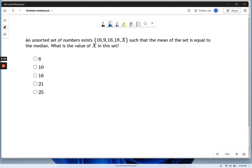Well, let's talk about mean and median first. Mean, if you remember, simply means the average. So the average of this set is 16 plus 9 plus 16 plus 18 plus this mysterious x, divided by the number of numbers, so divided by 5. That's the mean.